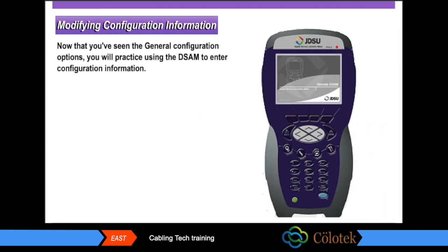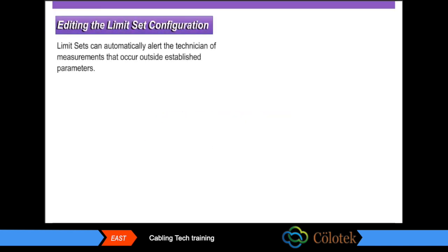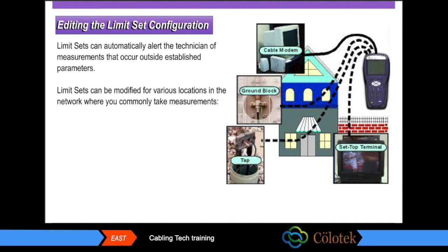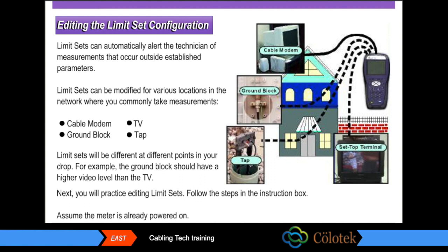Now that you've seen the general configuration options, you will practice using the DSAM to enter configuration information. In the next section, you will edit the configuration of the limit sets. Limit sets can automatically alert the technician of measurements that occur outside established parameters. Limit sets can be modified for various locations in the network where you commonly take measurements — for example, the cable modem, ground block, TV, and tap.